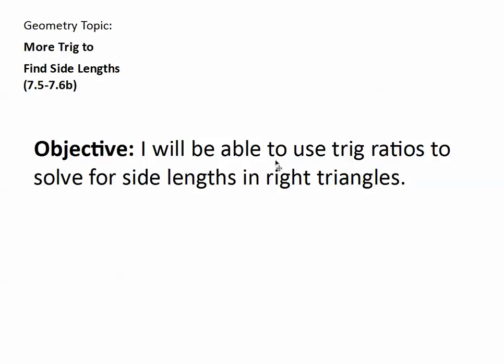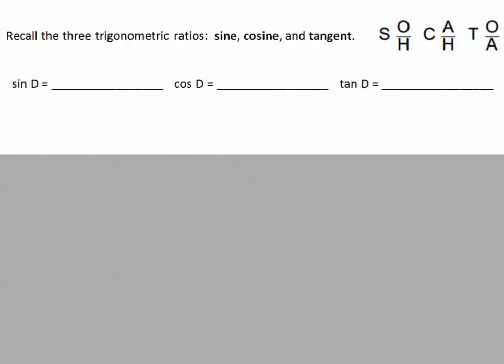In this section, our objective is to be able to use trig ratios to solve for side lengths in right triangles. Let's begin by recalling the three trigonometric ratios: sine, cosine, and tangent. Remember we used SOH to help us do this. SOH to remember sine of angle D is opposite over hypotenuse. Opposite side over hypotenuse. You can do the other two. Go ahead and fill it in and come back when you're done. Ka, Toa, and there we have it.